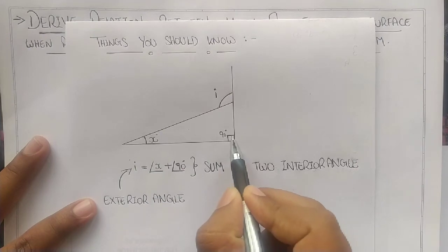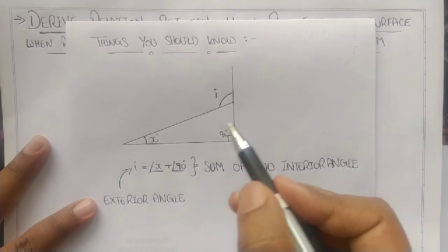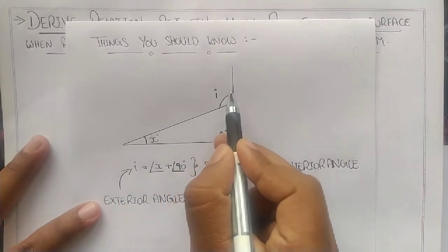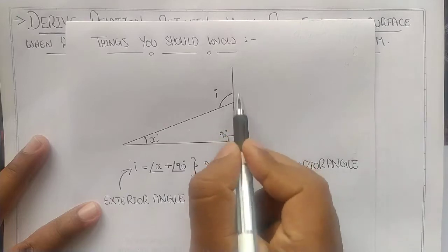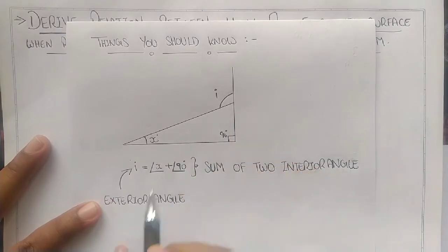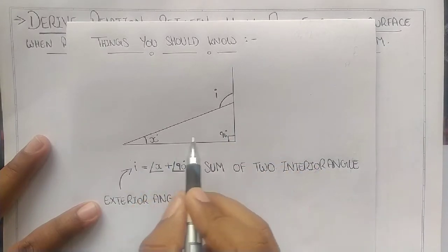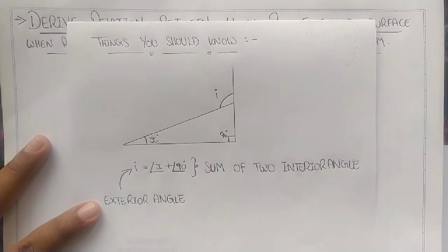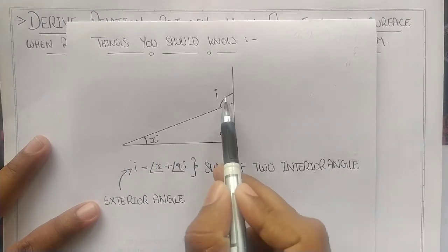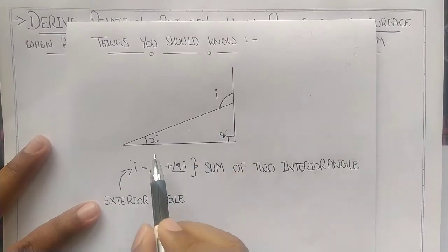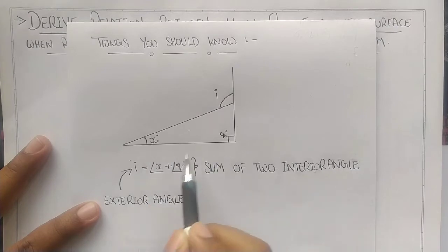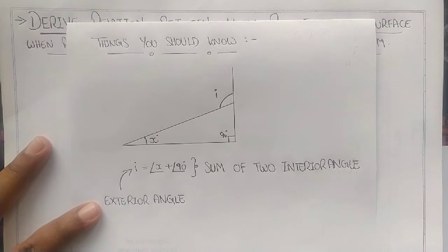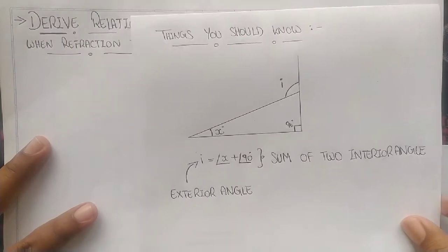The exterior angle made by this extended line is equal to the sum of the other two interior angles. So the exterior angle I is equal to X plus Y. With this basic knowledge, you can move forward for derivation.